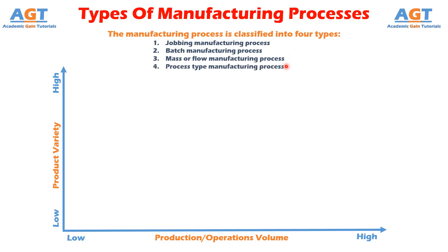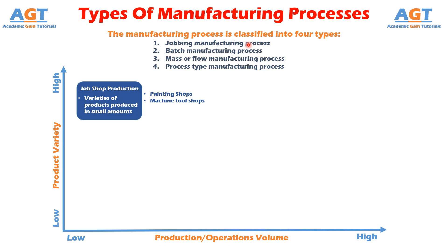Jobbing Manufacturing Process is used to produce one or few units of the products as per the requirement and specification of the customer. Production is to meet the delivery schedule and costs are fixed prior to the contract made with the customer.